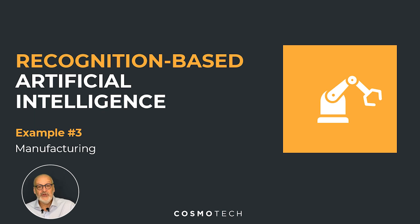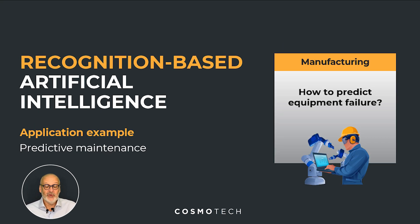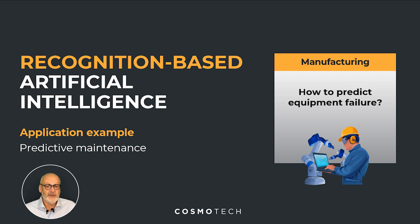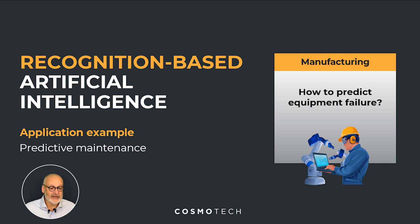In industry, for example, when you do what is called predictive maintenance: you have a machine with a lot of sensors, you look at a lot of data from that machine, and having learned from past data, you can recognize a pattern in the data that suggests that maybe in three or four hours, or tomorrow, there will be a failure on this machine. That is recognition-based artificial intelligence.